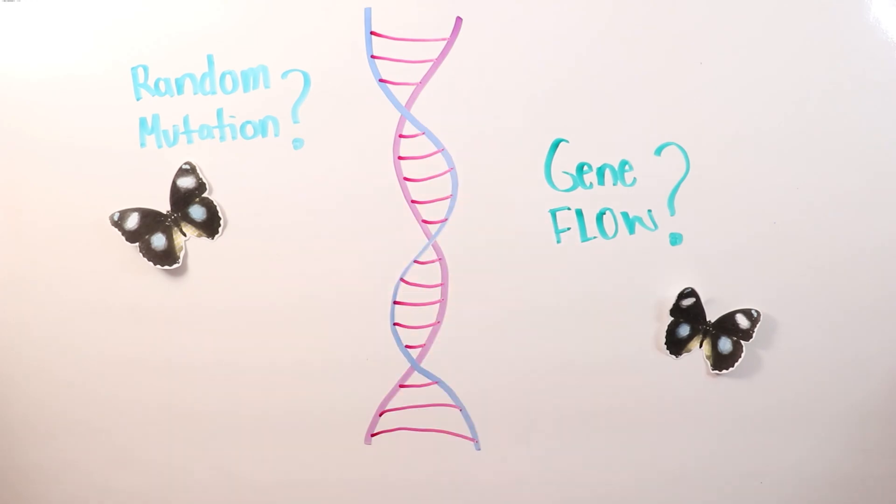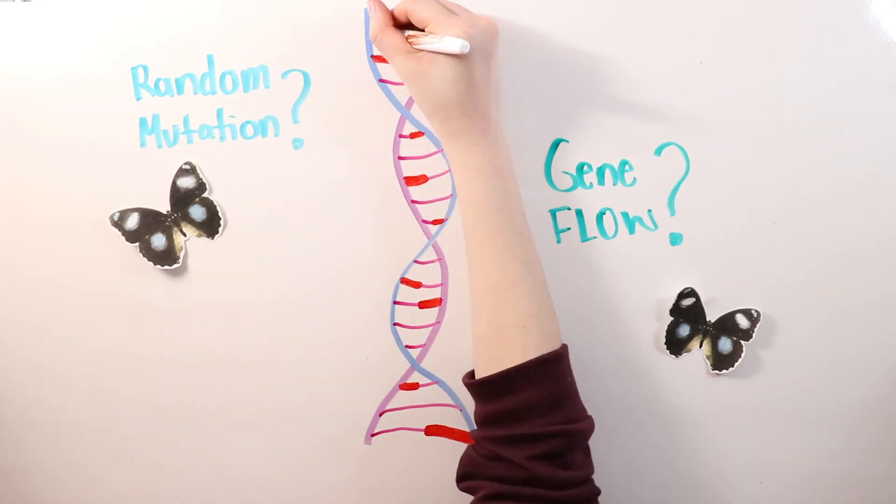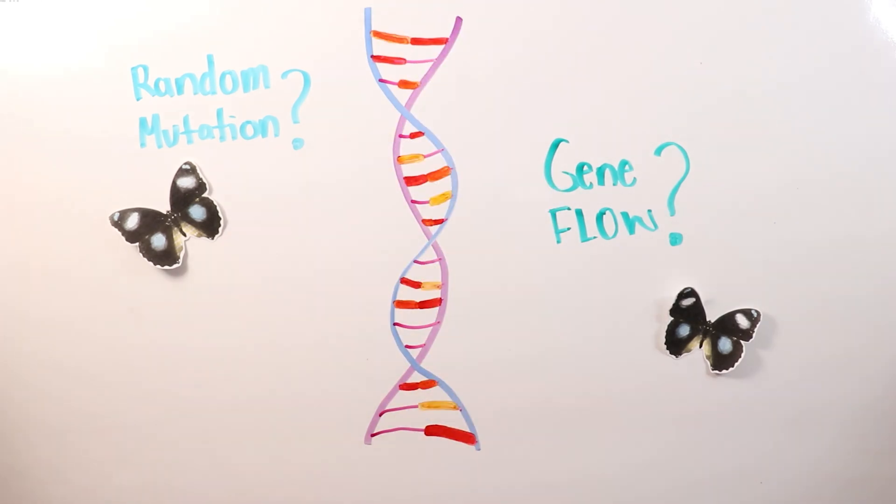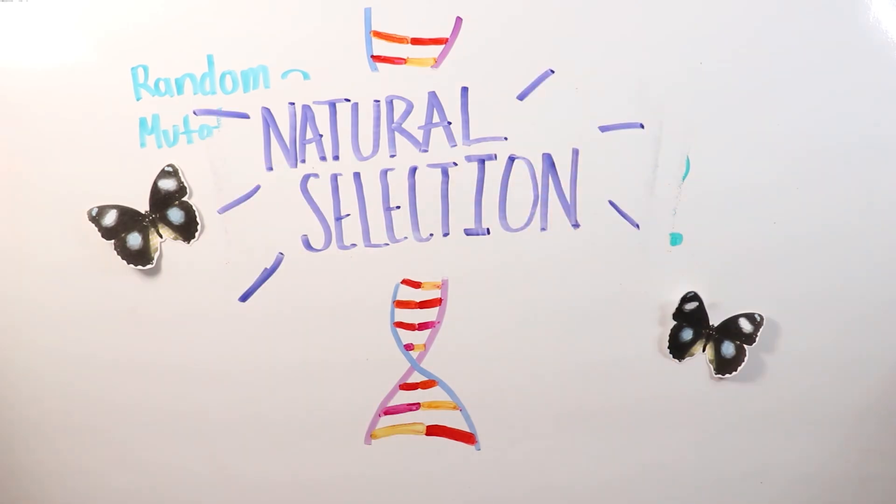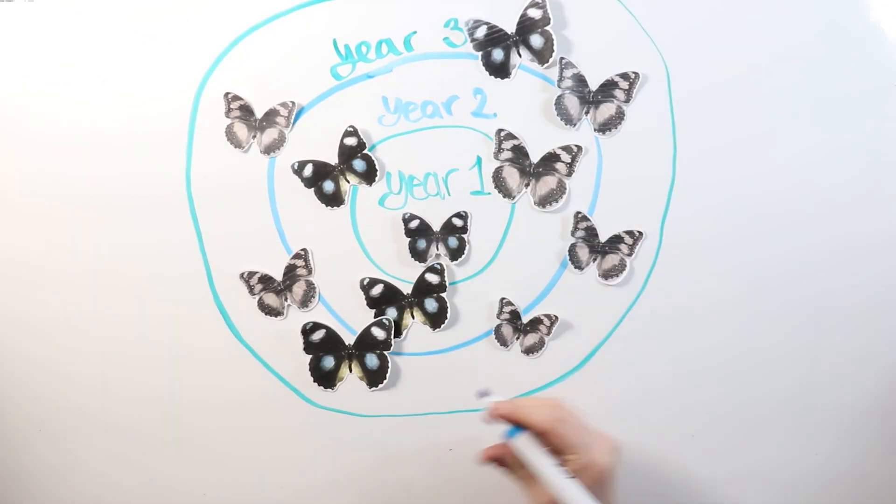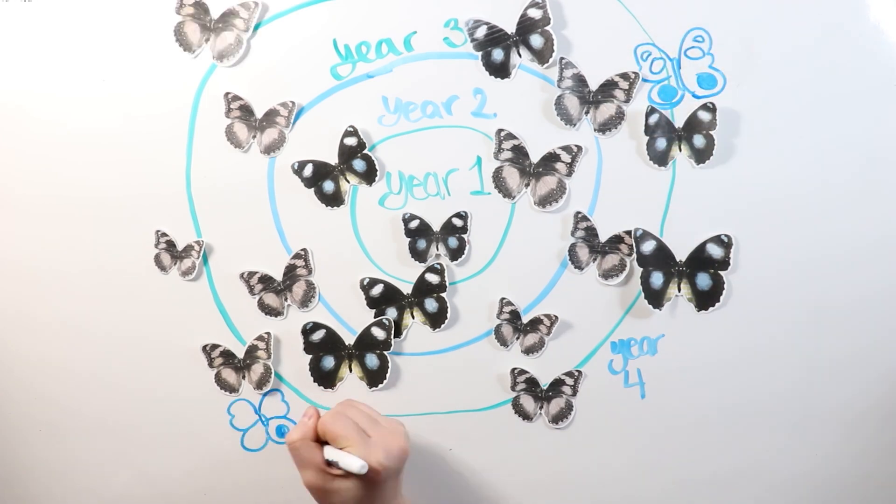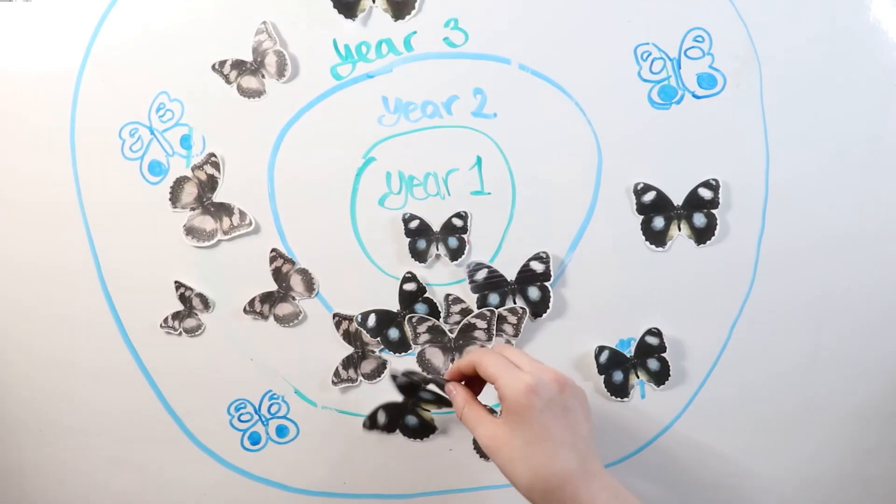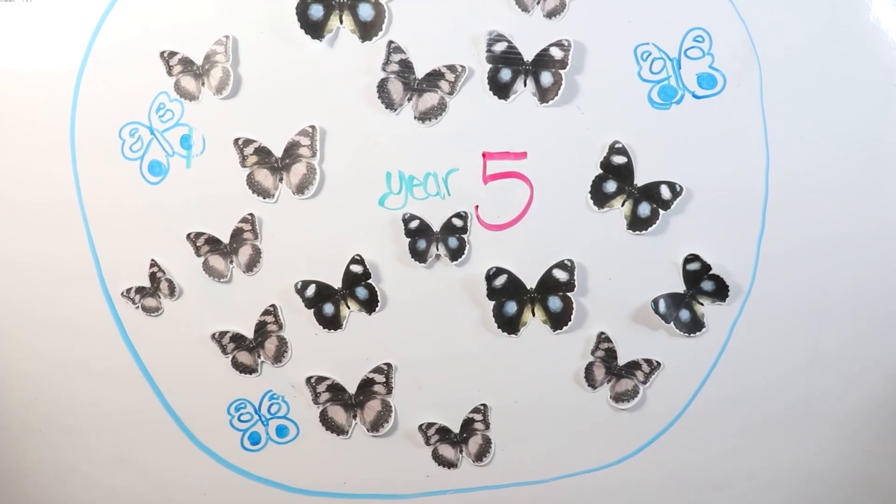Regardless whether these butterflies got this gene from a random mutation or from migration, the survival of the new generation of male blue moon butterflies is thanks to natural selection. In fact, this gene was so successful that it spread throughout the entire population of butterflies within 10 generations, and this allowed for the species to make a big comeback in just 5 years.